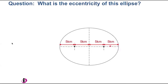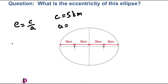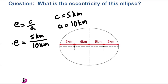You can pause the video and calculate it, then I'll come back and solve the problem with you. So let's solve this. We know that e equals c over a. We need to figure out what c and a are. c is the distance from the center to one of the focus points — that's five kilometers. And a is the distance from the center to one of the two edge points — that's five kilometers plus five kilometers, a total of 10 kilometers from the center to the outer edge. So eccentricity is c over a: five kilometers divided by 10 kilometers. The kilometers cancel out and we get 5 divided by 10, which is 0.5. That is our eccentricity.